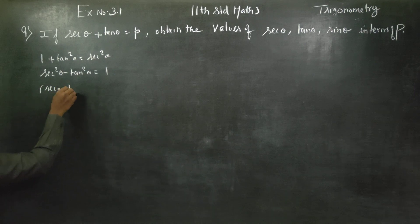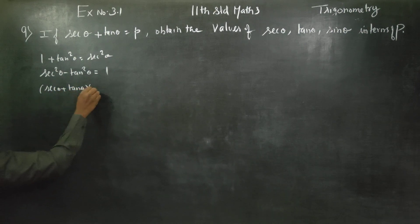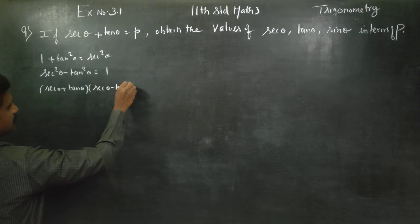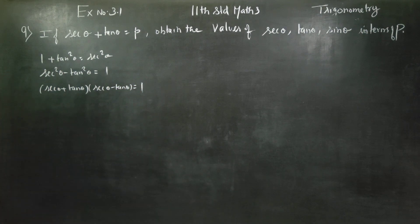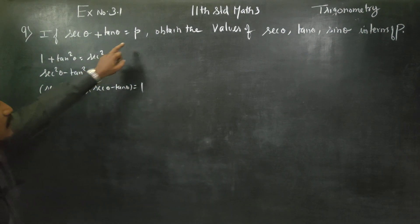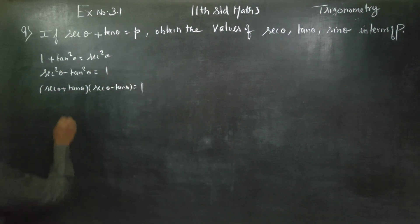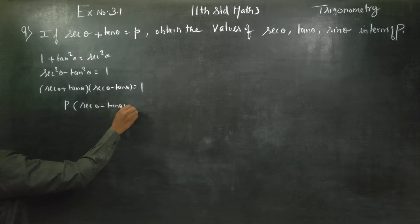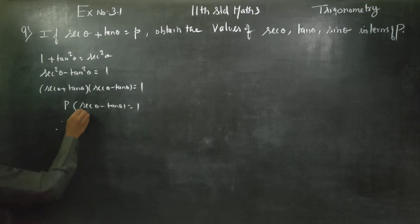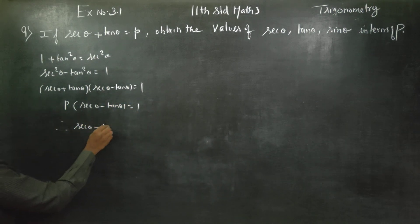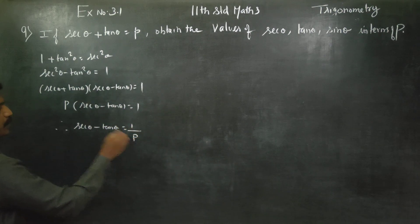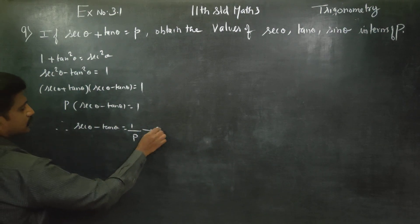Applying a squared minus b squared equals (a plus b) into (a minus b), we get: (secant theta plus tan theta) into (secant theta minus tan theta) is equal to 1. Since secant theta plus tan theta equals P, we have P into (secant theta minus tan theta) equals 1. Therefore, secant theta minus tan theta equals 1 by P. This is result number 2.